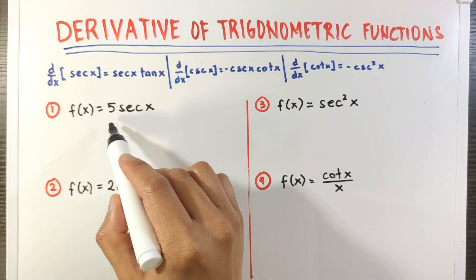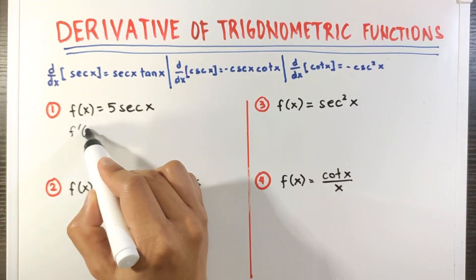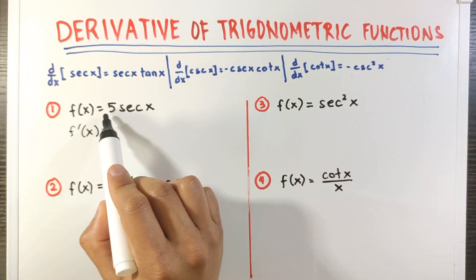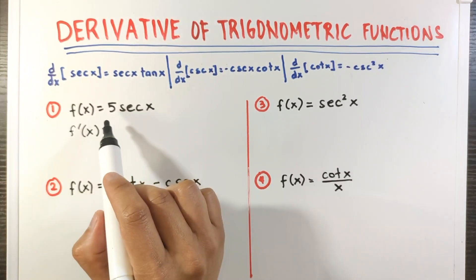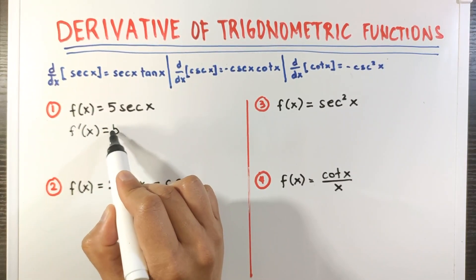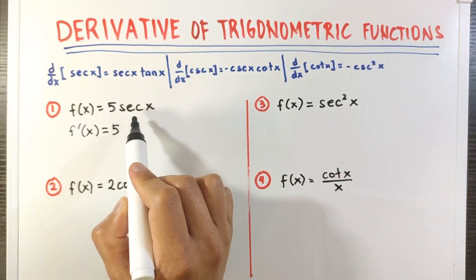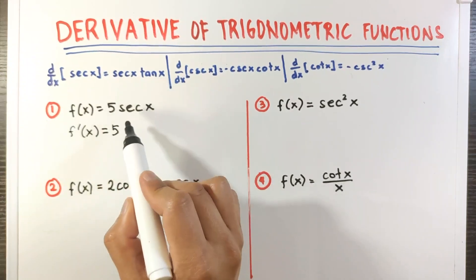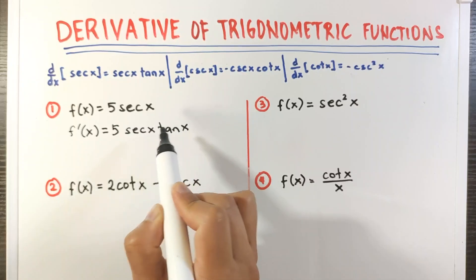Number one: find the derivative of 5 secant x. Since we have a constant here, we apply the constant multiple rule — we copy the constant and multiply it by the derivative of secant x, which is secant x tangent x. So the final answer is 5 secant x tangent x.